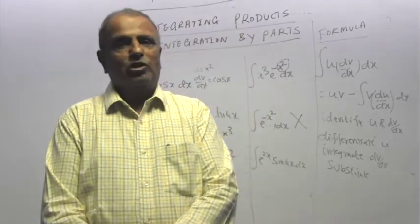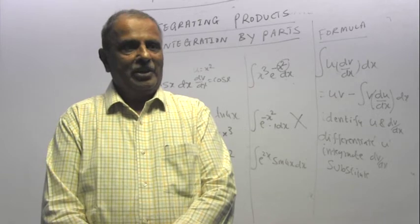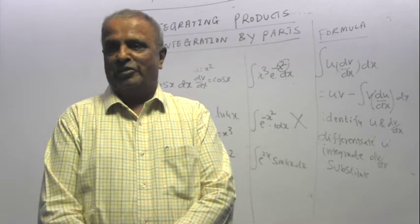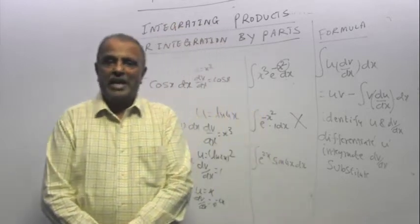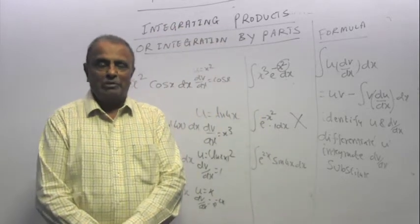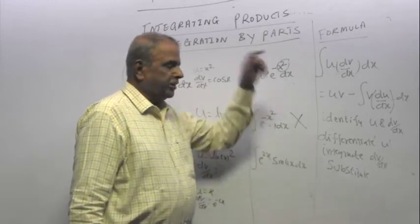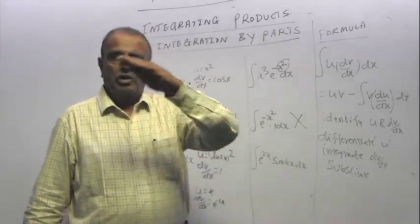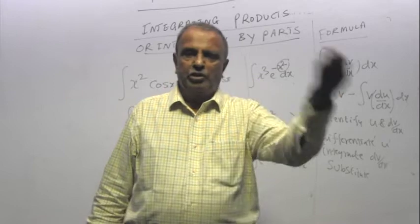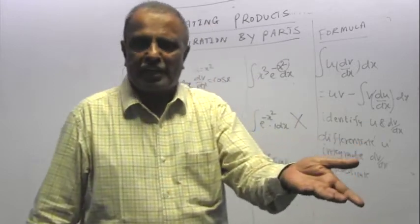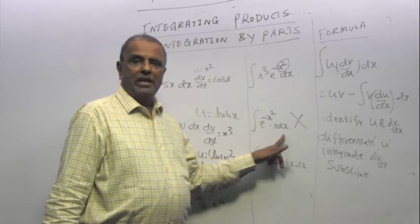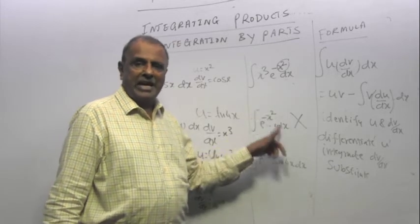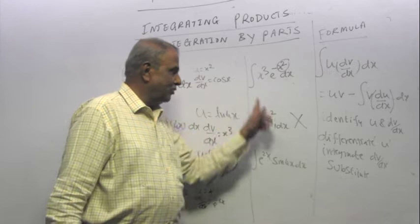So suppose I put a 1 and say e power minus x squared is u, and then dv/dx is 1. When I integrate, I get e power, dv/dx gives you 1 gives you x. x times minus 2x e power minus x squared. So it becomes 2x squared e power minus x squared. You cannot integrate it. So the question becomes more complicated.